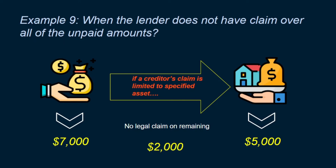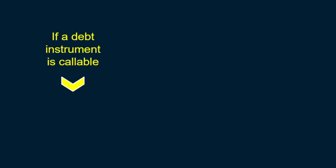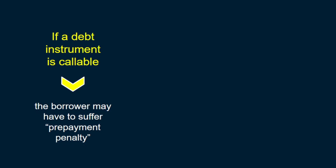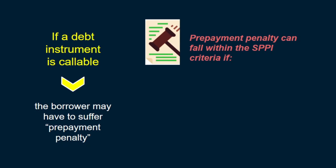Finally, if a bond is callable — meaning the borrower has the option to prepay — the borrower might be contractually obliged to pay an amount in addition to principal and interest, normally called a prepayment penalty. This prepayment penalty compensates the holder for early termination. The question is: if an instrument has a contractually defined prepayment penalty, would that still comprise solely payments of principal and interest, given that it is in addition to principal and interest? Such a prepayment penalty can fall within the SPPI criteria if certain conditions are fulfilled.